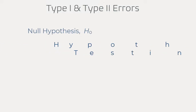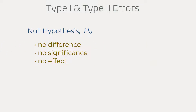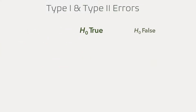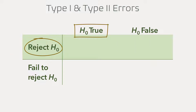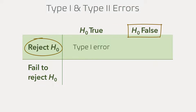In hypothesis testing, the null hypothesis is a statement that suggests no difference or no significance, and it can either be true or false. When making decisions, we either reject the null hypothesis or we fail to reject it. If the null hypothesis is true and we reject it, we have committed what we call a type 1 error. But if the null hypothesis is false and we reject it, we have made a correct decision.